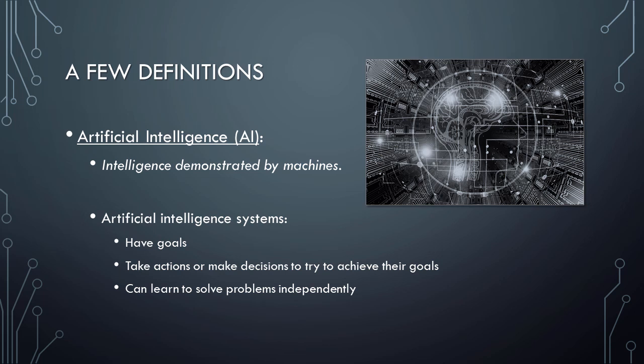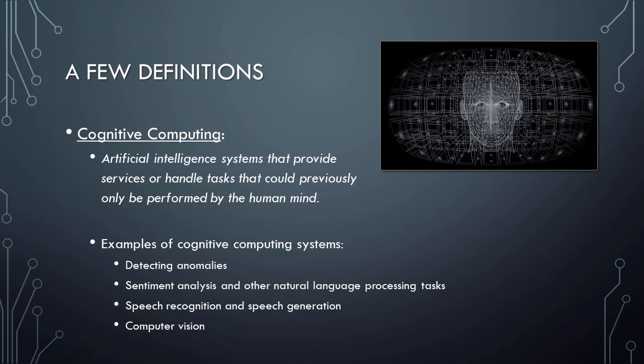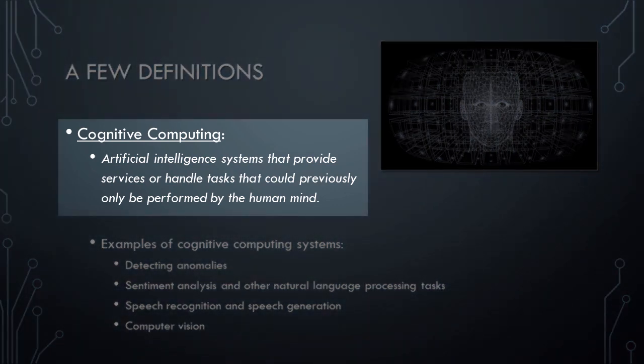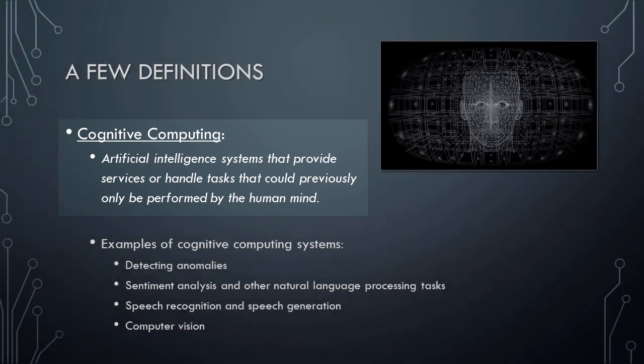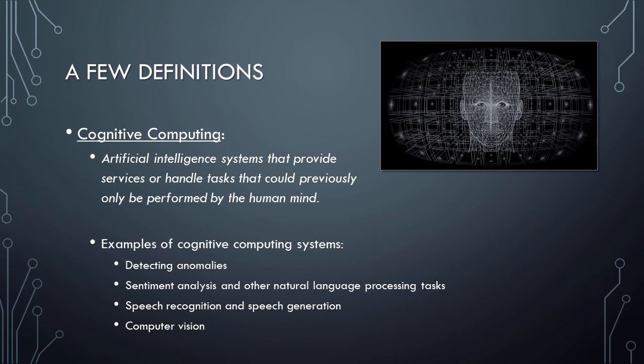Instead, they can learn the best way to solve the problem or perform the task on their own. Cognitive computing, on the other hand, refers to artificial intelligence systems that provide services or handle tasks that could previously only be performed by the human mind. Thus, we can think of all cognitive computing systems as being artificial intelligence systems, but not all artificial intelligence systems are cognitive systems.